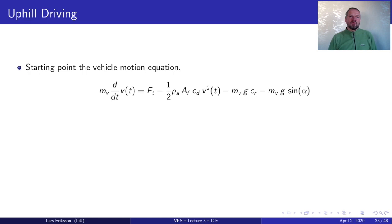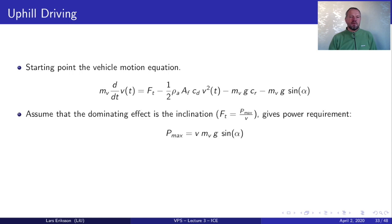The next performance factor is the uphill driving where we are looking at the inclination. And in this case we assume that the dominating effect of the inclination is the road slope. So that the road slope term dominates the equation. And then we can get an estimate of the maximum power once again of the engine that gets connected to the velocity we would like to have and the slope that we would like to reach this velocity.